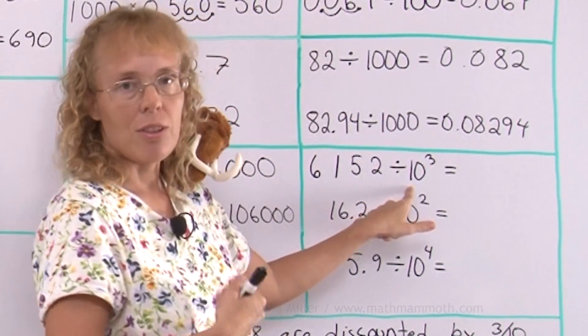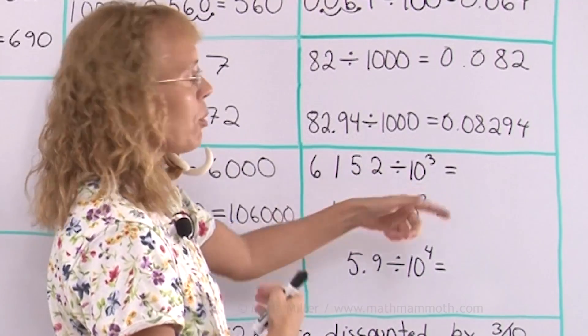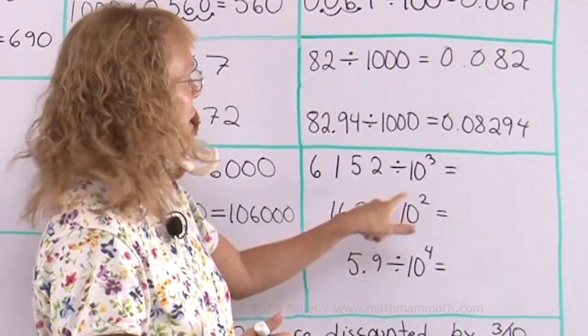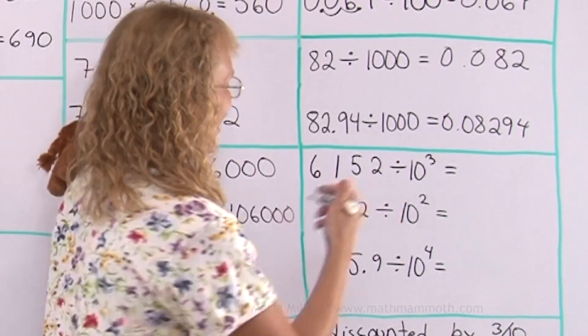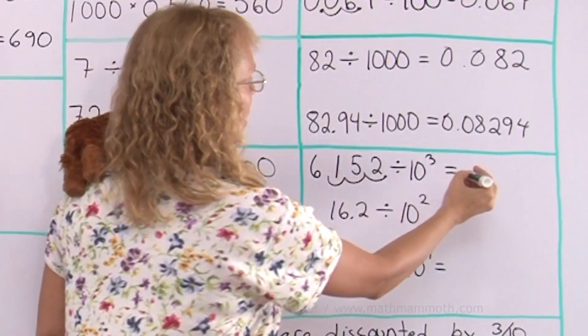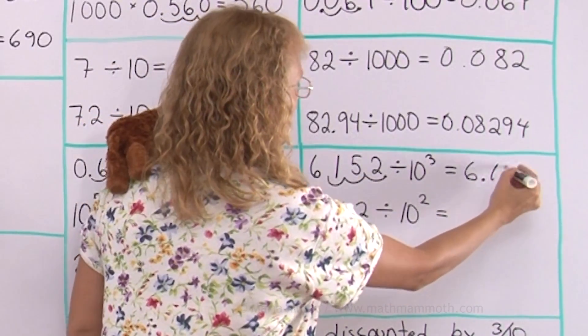Divide by 10 to the third power. It means move the decimal point three steps. But where is the decimal point? Well, of course it's here, right? It's a whole number. Now we move it this way to make the number smaller and we get 6.152.